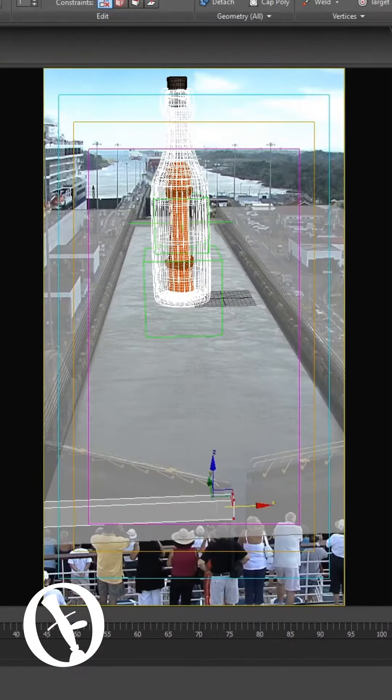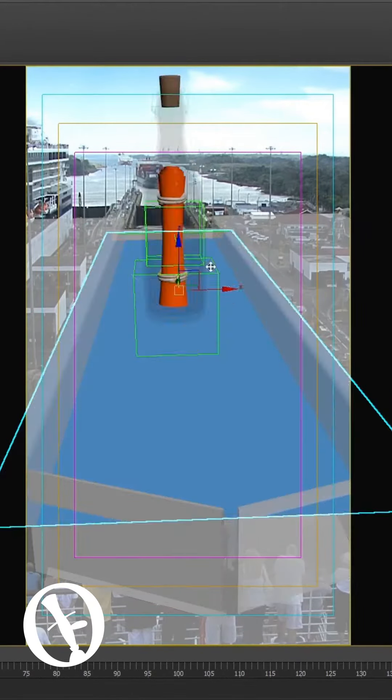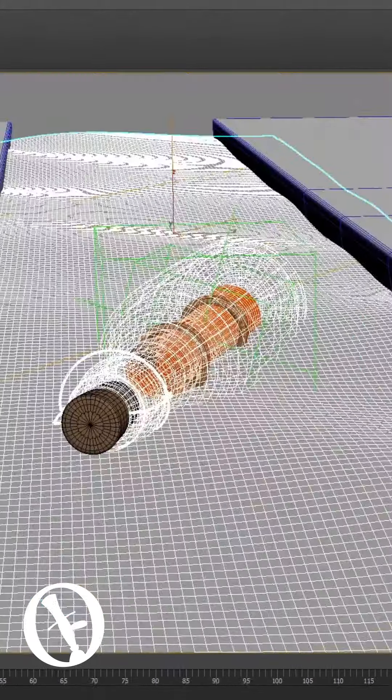We then transition to the locks of the Panama Canal, where the bottle submerges into realistically simulated 3D waters. Colorization arrives with lights and visual effects, crafting the desired magic.